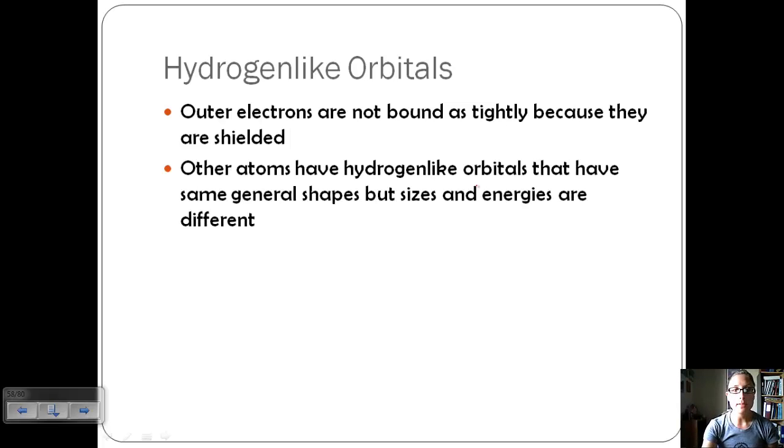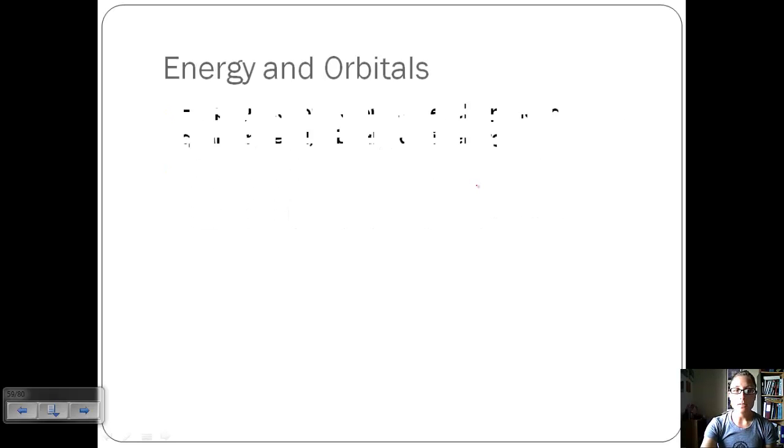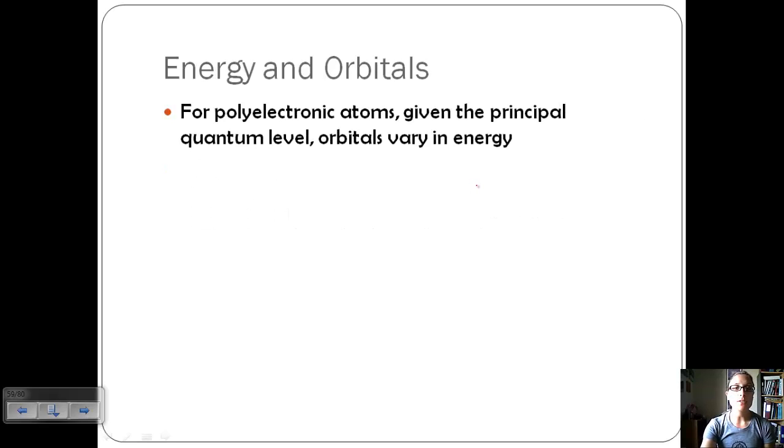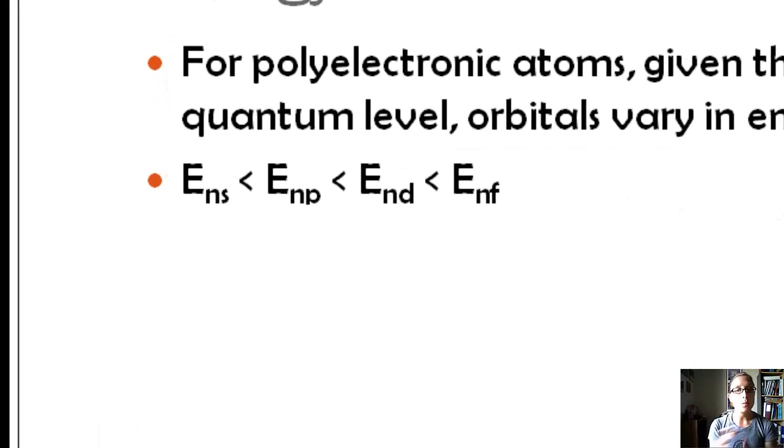We could say outer atoms have hydrogen-like orbitals that have the general shapes, but the sizes and energies are going to be different. For polyelectronic atoms, given the principal quantum level, the orbitals are going to vary in energy. Remember how we said that anything with the same value of n, that principal quantum level, had the same amount of energy? Well, this can change a little bit within that principal quantum level.